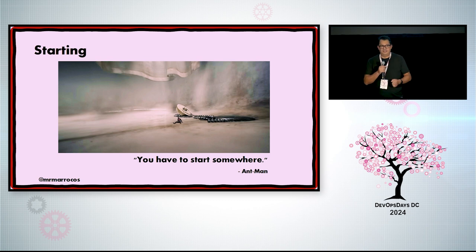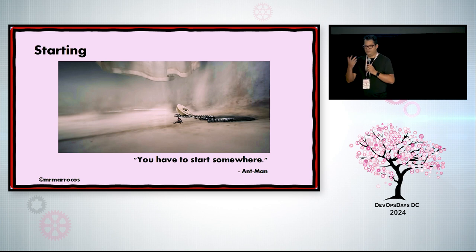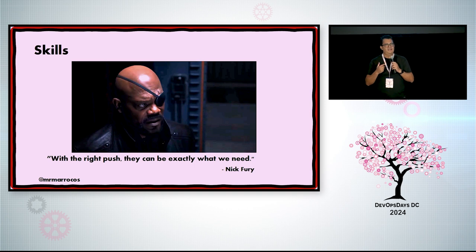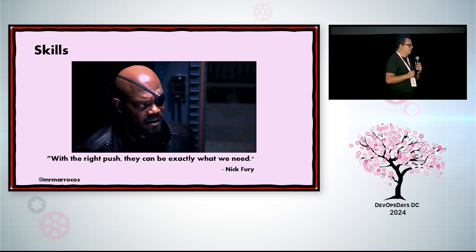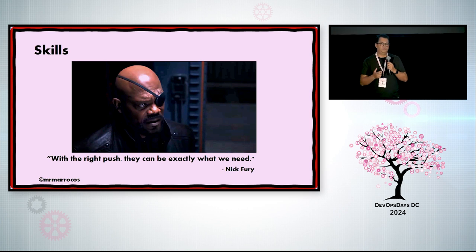How can you start delegating? Start with small things, small changes, experimenting — just as with other DevOps practices, you experiment and have continuous improvement. Start asking questions like: what are the tasks that I don't really need to do myself? What are the skills my team has that are being underutilized? What tasks can I match to those skills? How can I make that connection? Then you start identifying the people who can help you with those tasks.